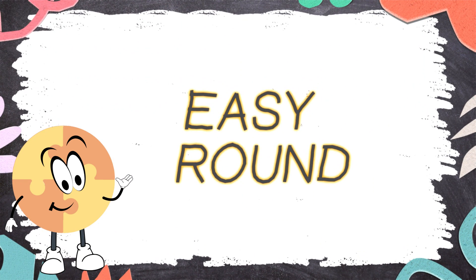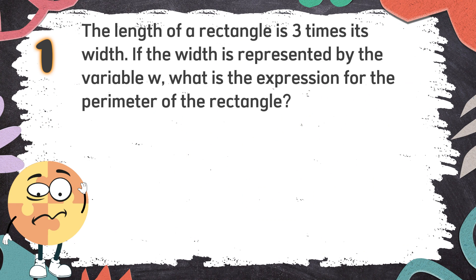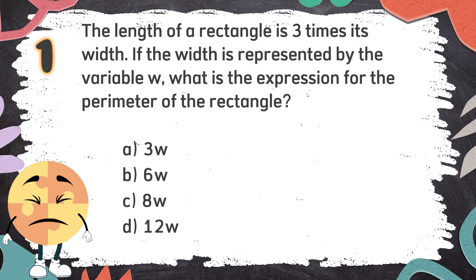Easy Round. Number 1: The length of a rectangle is 3 times its width. If the width is represented by the variable W, what is the expression for the perimeter of the rectangle? The choices are: A. 3W, B. 6W, C. 8W, D. 12W.